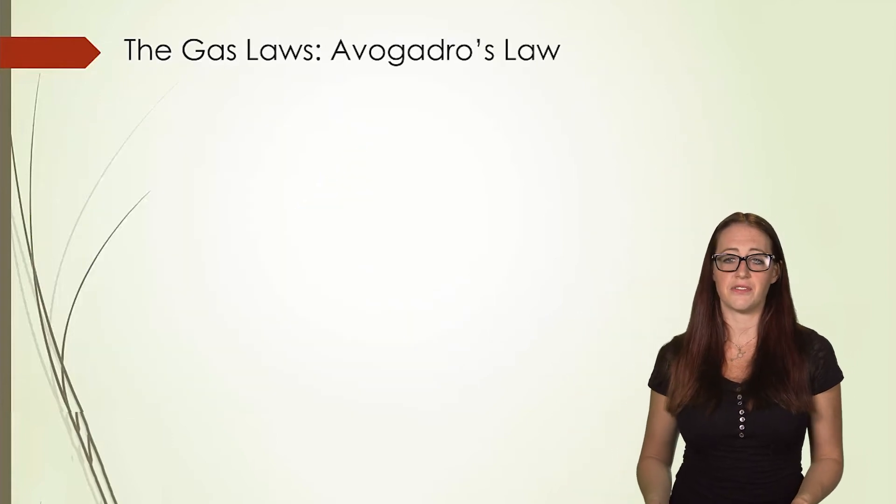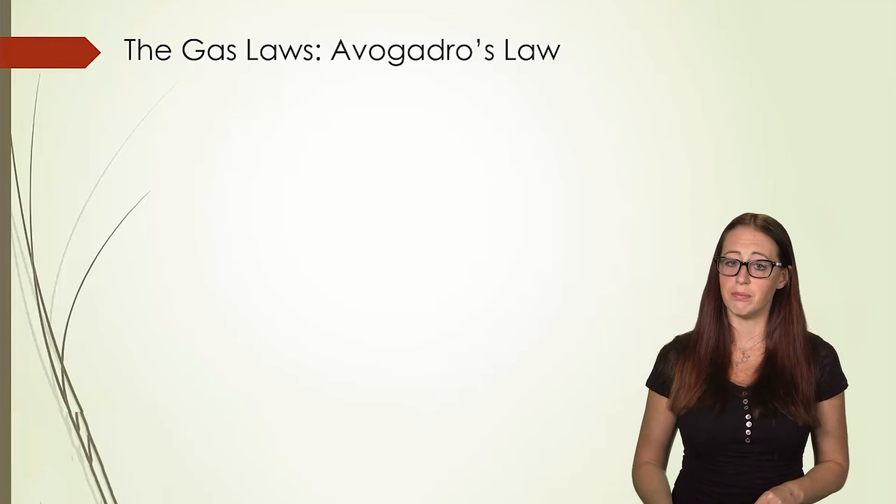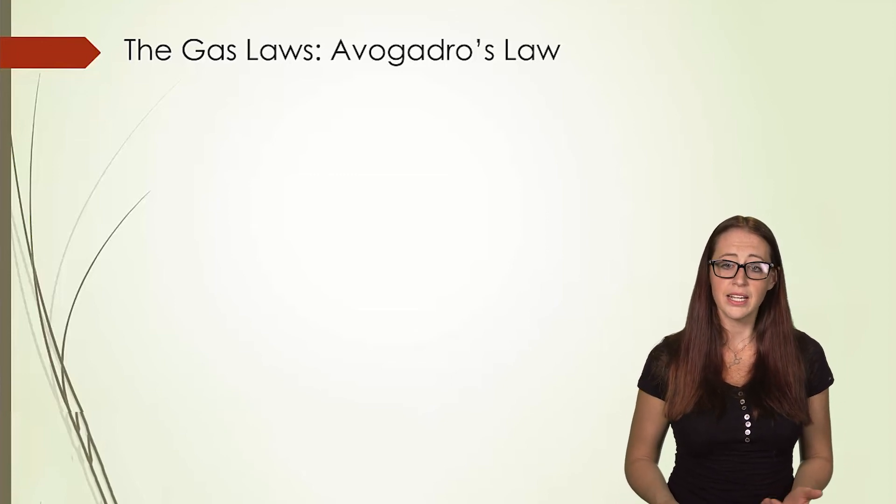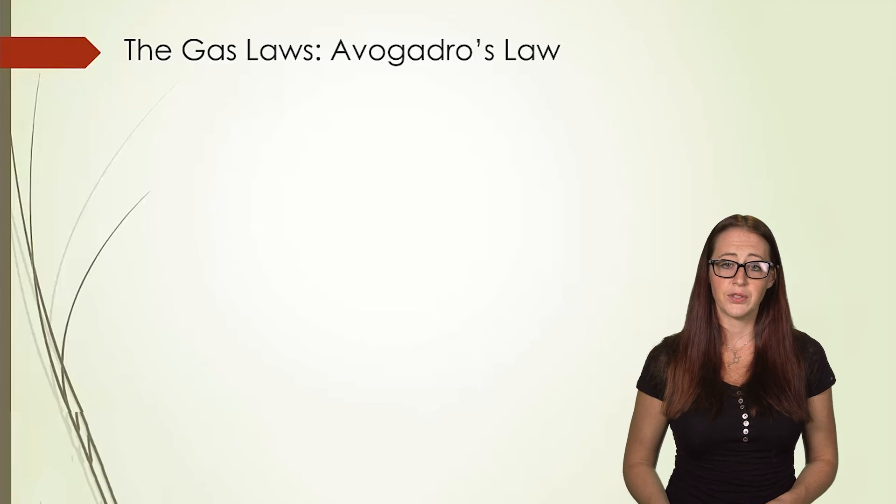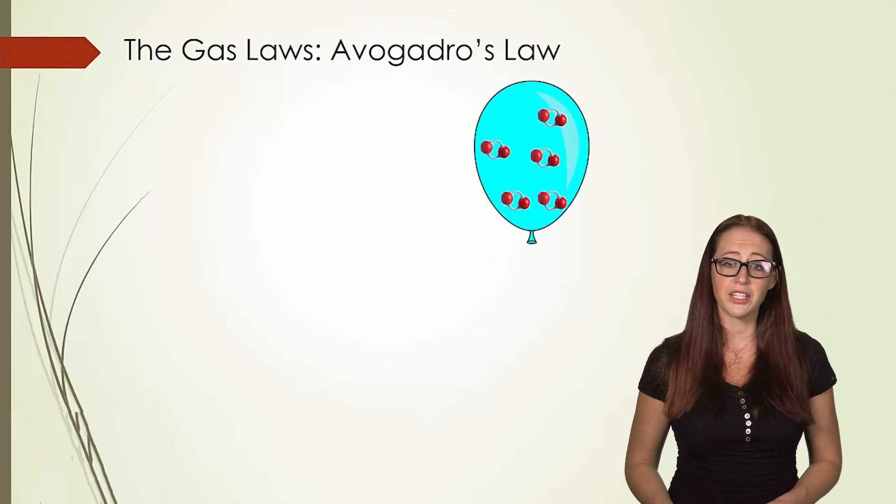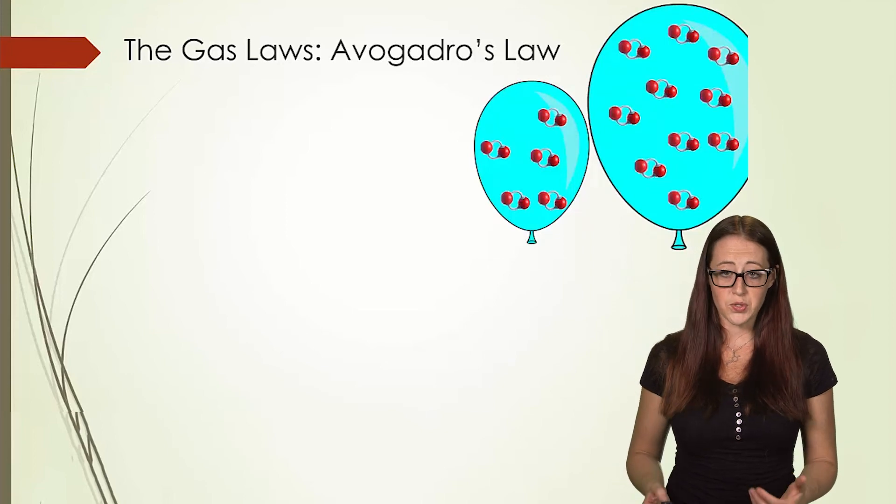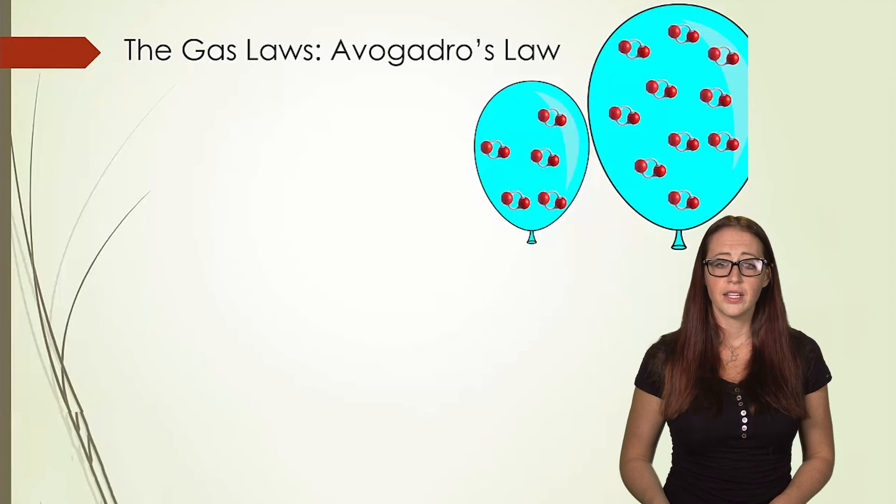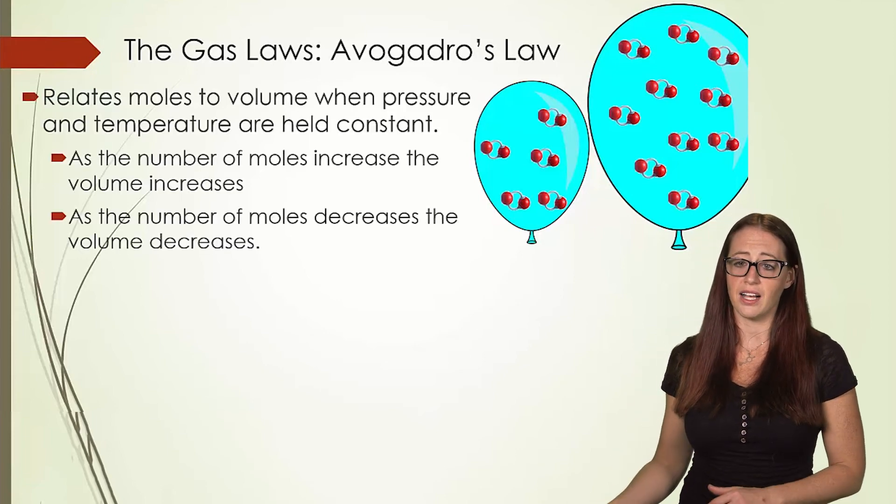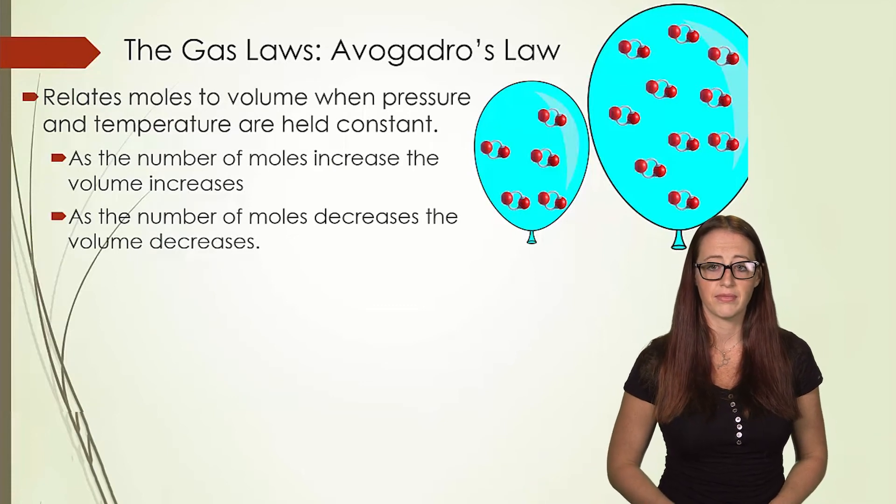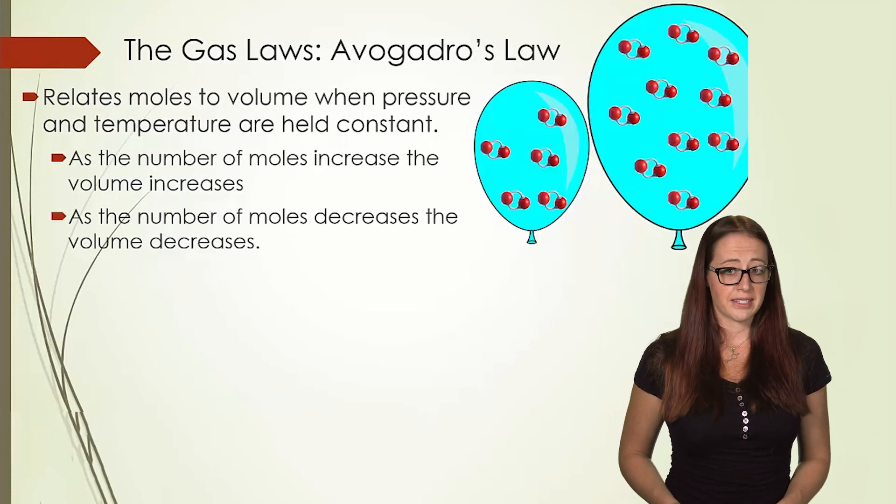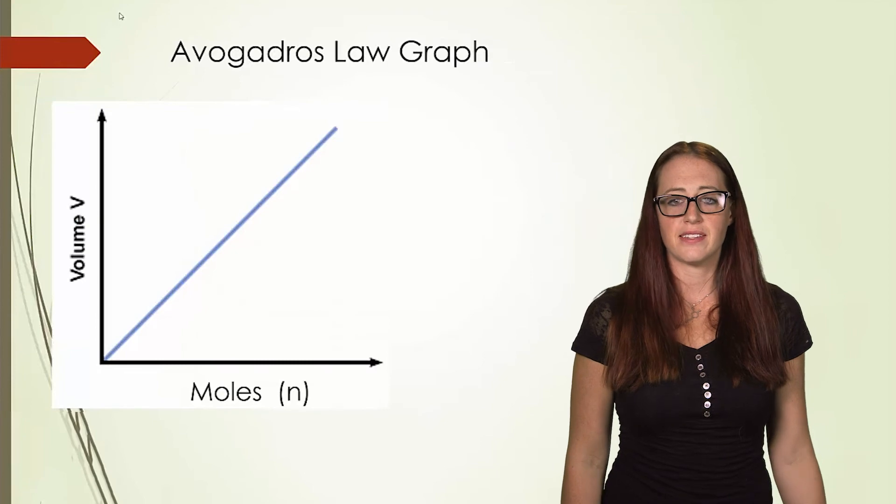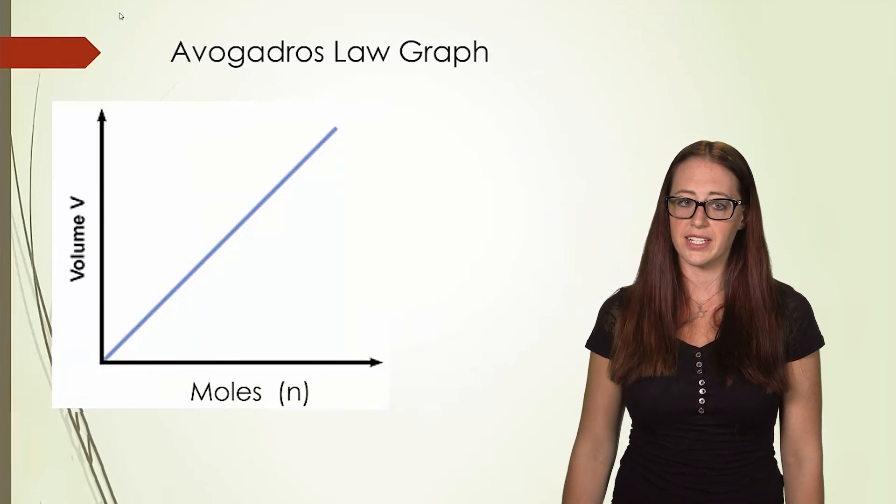And I saved the easiest for last. If we increase the number of moles in an expandable container, what will happen to the volume? Think about a balloon for this one. If you increase the number of moles in the balloon, the volume will increase as well. If you decrease the number of moles in the balloon, the volume will decrease. The balloon makes a good approximation for it, since its pressure is constant based on the atmospheric pressure. Mathematically, we say the volume is proportional to n. We can graph this as a straight line. Increasing moles increases volume.